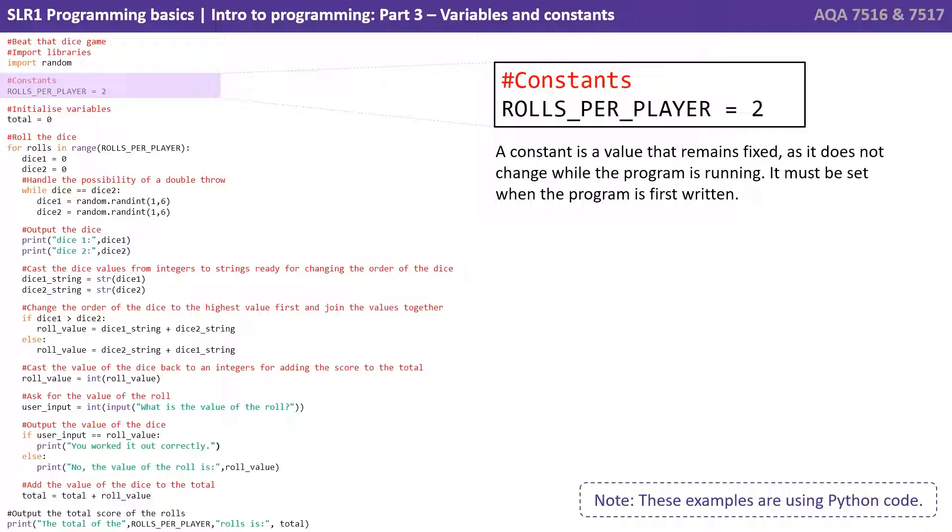Again though, it's very similar. We're carving up a piece of memory, assigning it the value two, and then labeling that piece of memory with a label ROLLS_PER_PLAYER. The difference here is that's now fixed. Whenever we access that label we'll get two, and we won't be able to change its contents while the program is running.